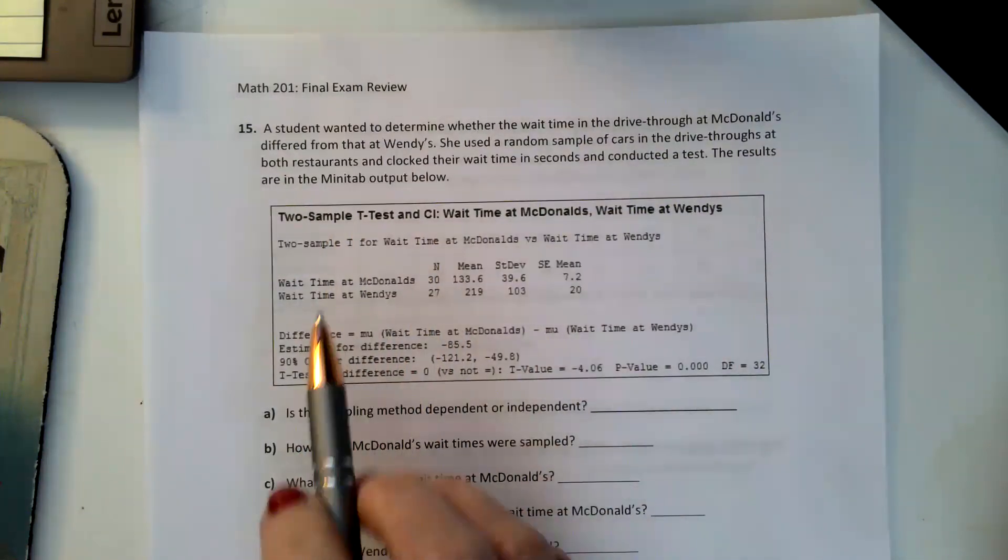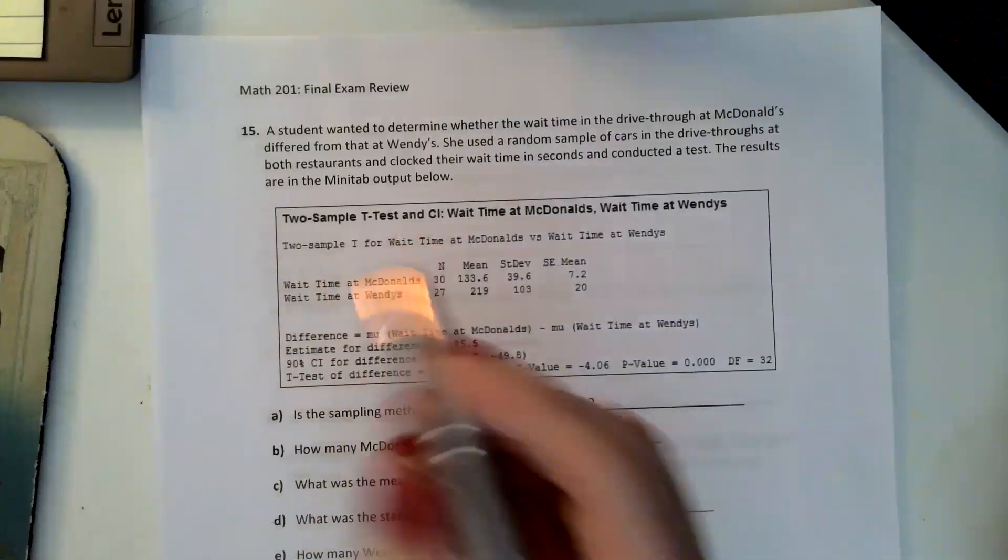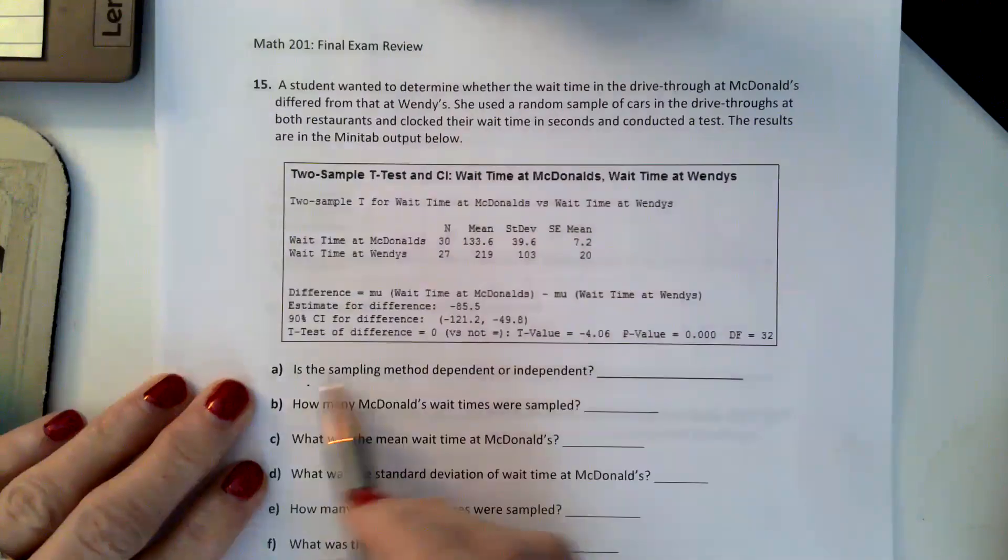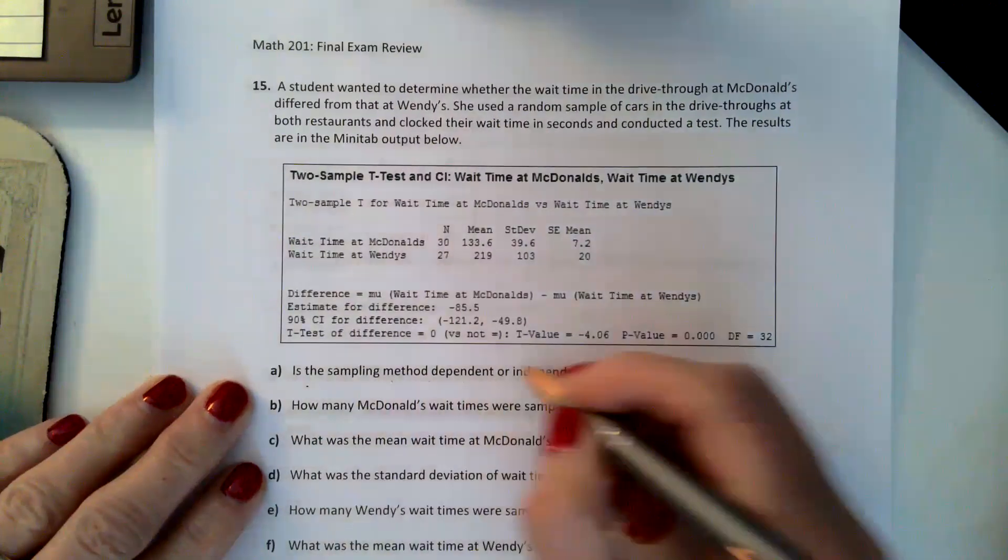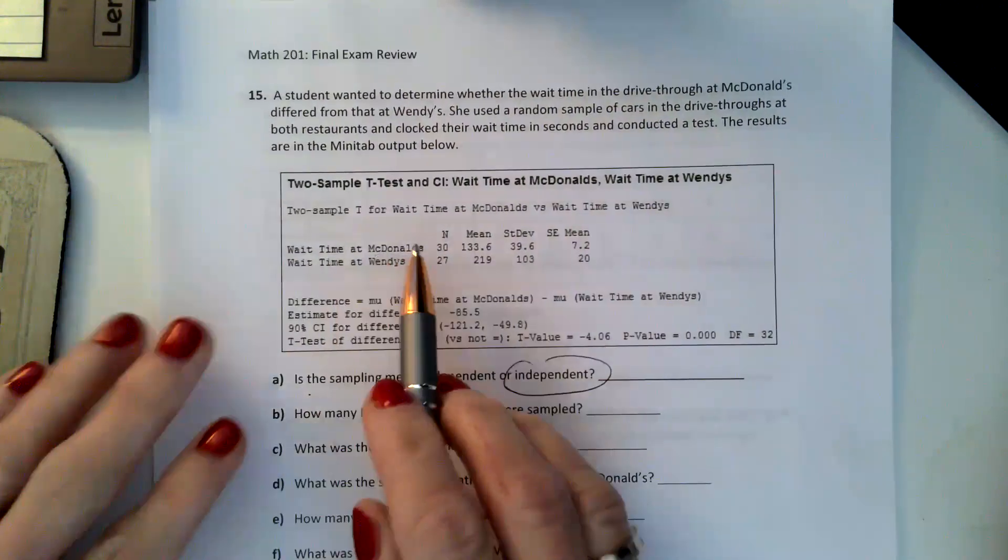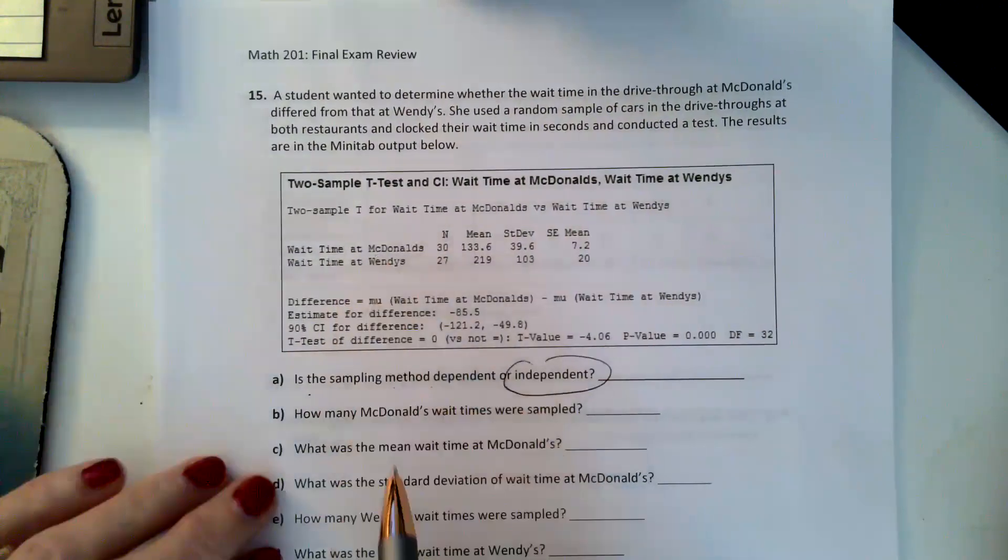So we have, it's a two-sample t-test because they're independent samples. And part A is asking, is the sampling method dependent or independent? It's independent because there are two samples measured each separately, McDonald's and Wendy's.